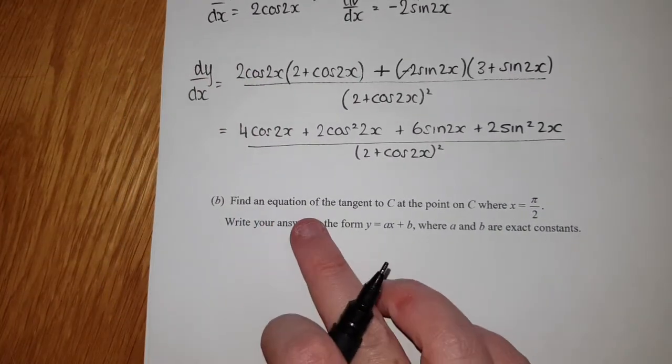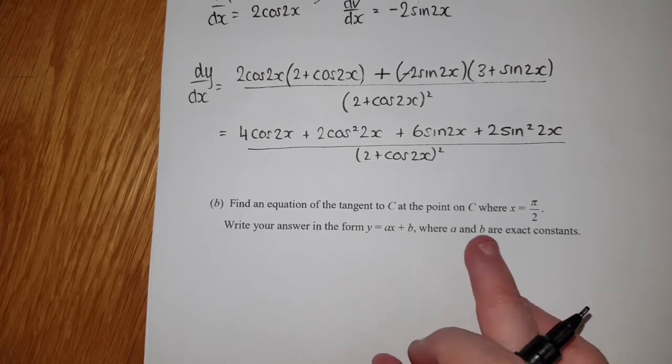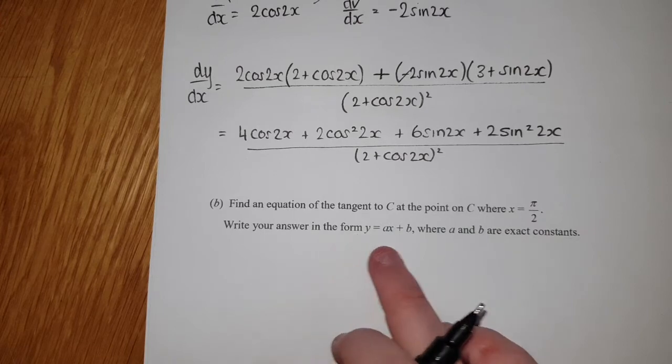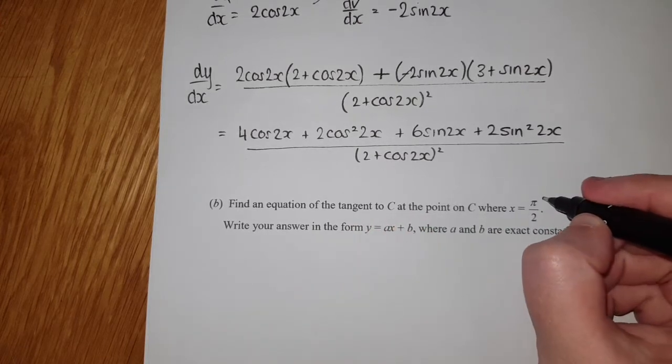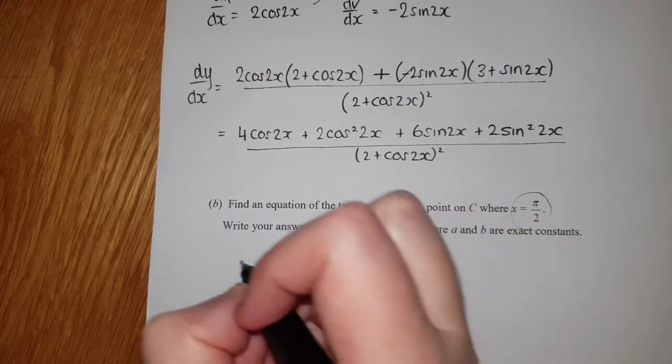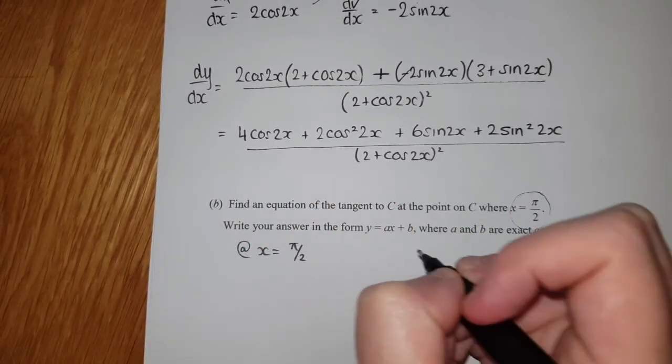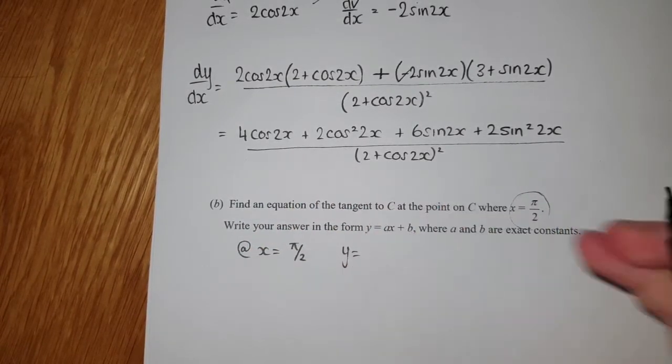Last bit is find an equation of the tangent to C at the point where x = π/2, giving your answer in this format. Anytime something's given like this in terms of π, remember that your calculator should be in radians. At x = π/2, we need to find y first of all.